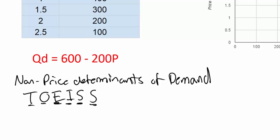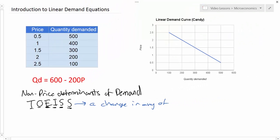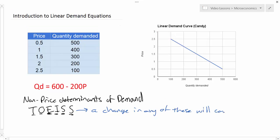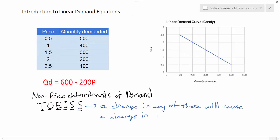So what we're going to talk about now is how a change in any of these will cause a change in either the A variable or the B variable in the demand equation.